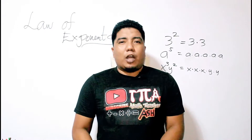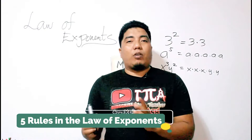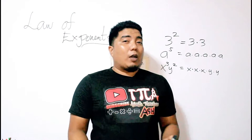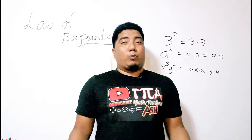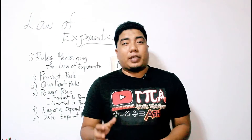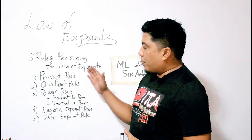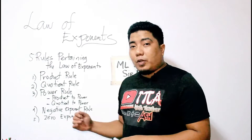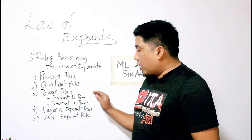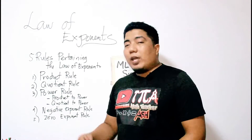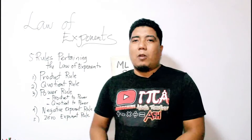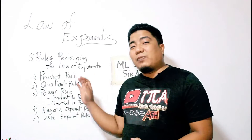Do you know that there are 5 rules pertaining to the law of exponents? These 5 rules will help you manipulate everything you encounter in terms of exponents. The first is the product rule. The second is the quotient rule. The third is the power rule, which has 2 sub-rules: the product to power rule and the quotient to power rule. The fourth is the negative exponent rule, and last but not least is the zero exponent rule.